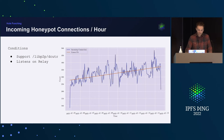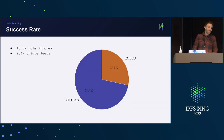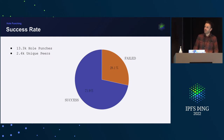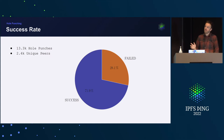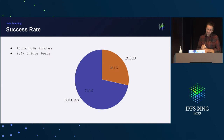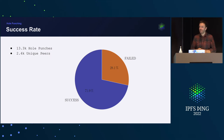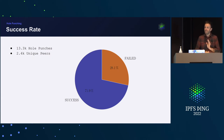Probably the most interesting graph: how successful is that? My client has performed roughly 13,300 hole punches to 2,500 unique peers, so every peer was probably hole punched about five times. The success rate is around 72%, while 28% have failed. This is not as good as the 90% Max reported in his FOSDEM presentation, but I think that measurement was in a more controlled setup — this is the success rate against random peers across the whole IPFS network.